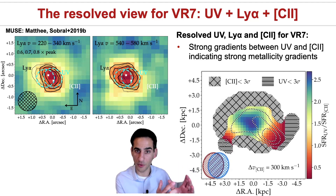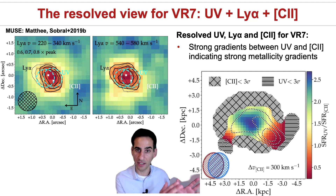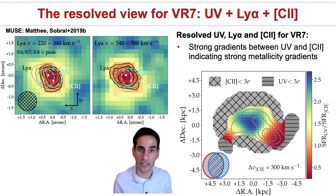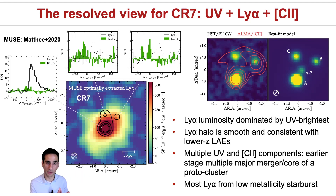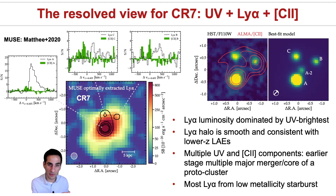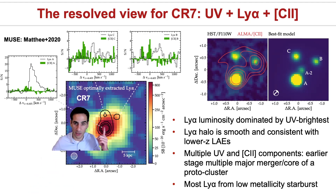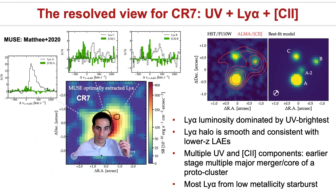With James Webb and the NIRSpec IFU, which is perfectly suited for this field of view, we will be able to establish the metallicity of different regions and measure a proper metallicity gradient. Pointing MUSE at CR7, we detect a beautiful Lyman-alpha halo extending over all the UV clumps, with a scaling very similar to lower-redshift Lyman-alpha emitters, though CR7 is incredibly more luminous. Any source resembling CR7 at lower redshift would be a clear AGN, but CR7 so far shows little evidence for hosting one.